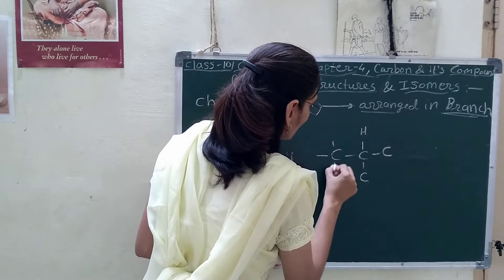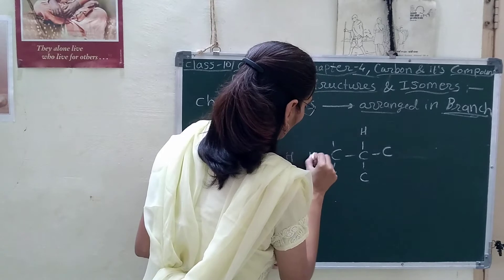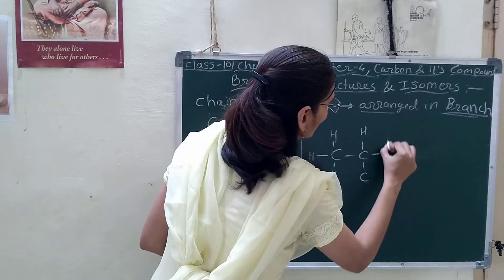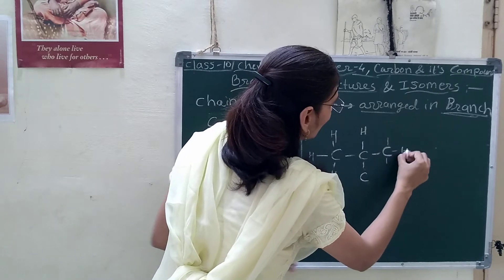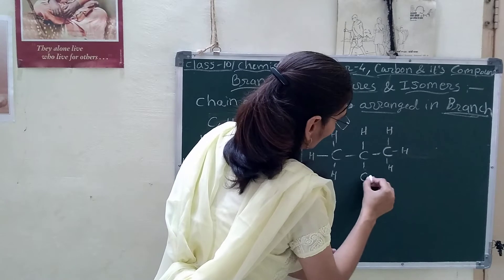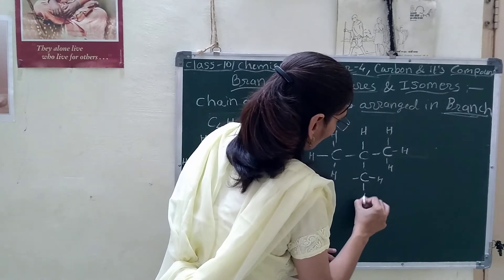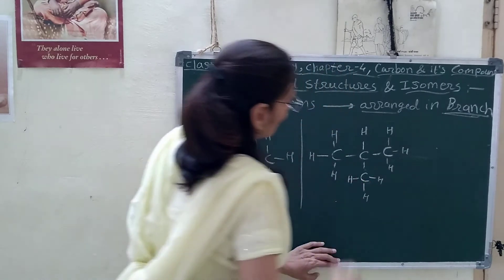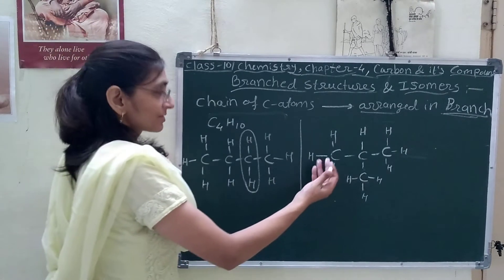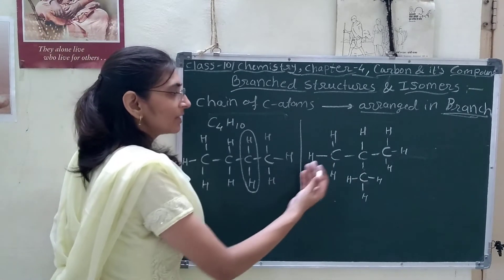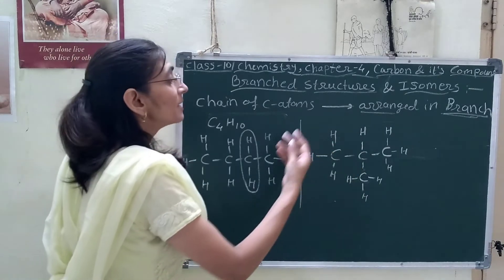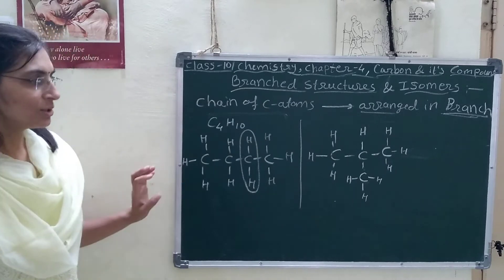For this carbon atom, 3 valencies are remaining. For this carbon atom again 3. For this carbon atom again 3. So this is the structure of the branch — the branch structure of butane in the form of its isomer. So how we can name this? How we can name this?